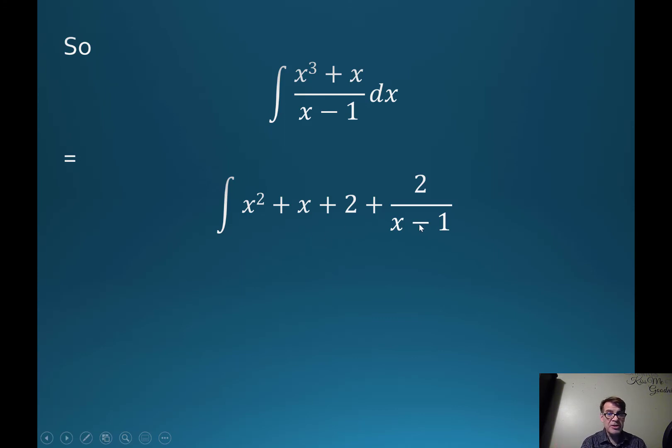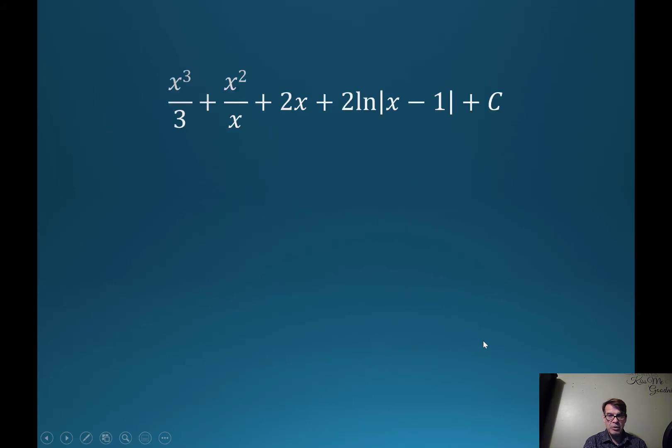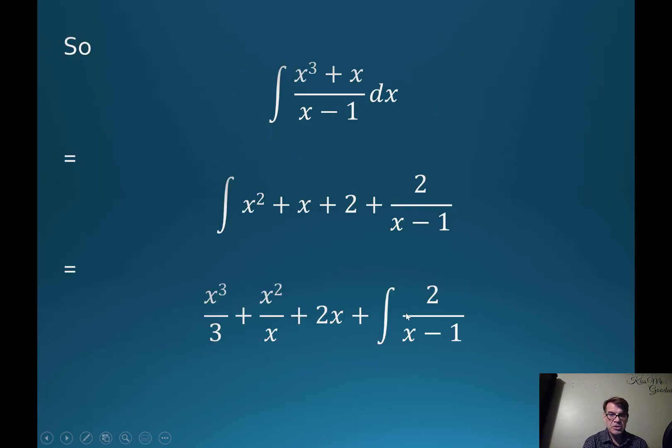There's the problem we started with, which equals what we just came up with. Now this I can integrate, right? The integral of x squared is x cubed over 3, the integral of x is x squared over 2, and the integral of 2 is 2x, plus c. Just one step more and we're done.